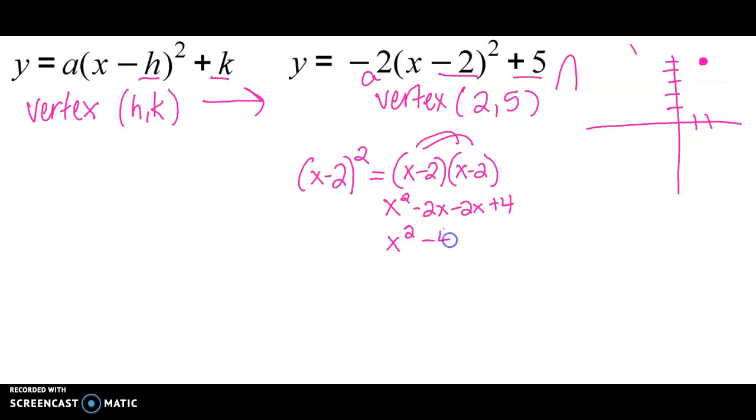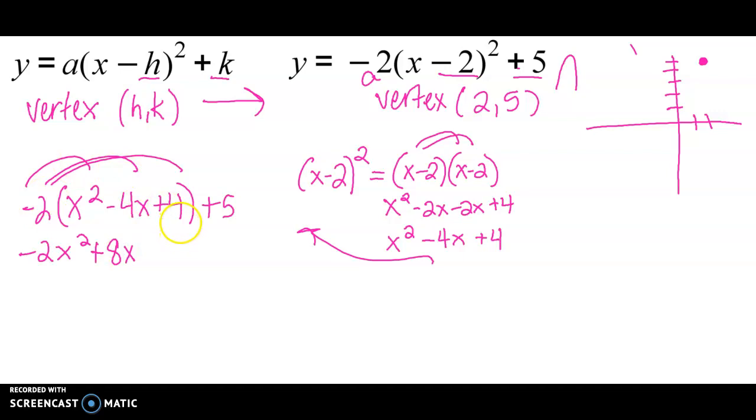Our middle two terms simplify, so we've got x squared minus 4x plus 4. Let's plug that back into our equation up here. We had negative 2 parentheses, now we have this trinomial x squared minus 4x plus 4. Finish off your equation with that plus 5. We're going to distribute that negative 2 to everything in parentheses, so we'll end up with negative 2x squared, plus negative times negative is a positive 8x, negative 2 times 4 is negative 8, and then we have plus 5. So now our equation should look like y equals negative 2x squared plus 8x, and negative 8 plus 5 is negative 3.